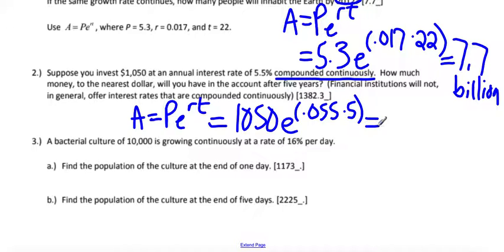So we put this into our calculator. And you should get $1,382.36. I know they said around the nearest dollar, but why would you do that? This is money. Round to the nearest cent.